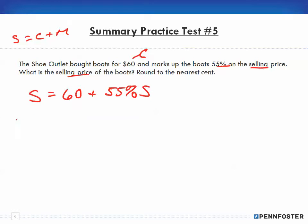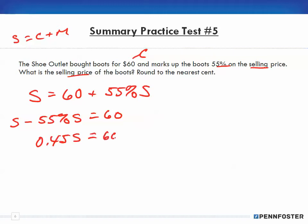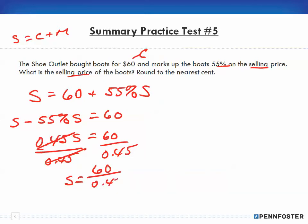Rearranging: selling price minus 55% of selling price equals $60. That means 100% minus 55% is 45%, so 0.45S equals $60. Dividing both sides by 0.45, S equals $60 divided by 0.45, which gives a selling price of $133.33.